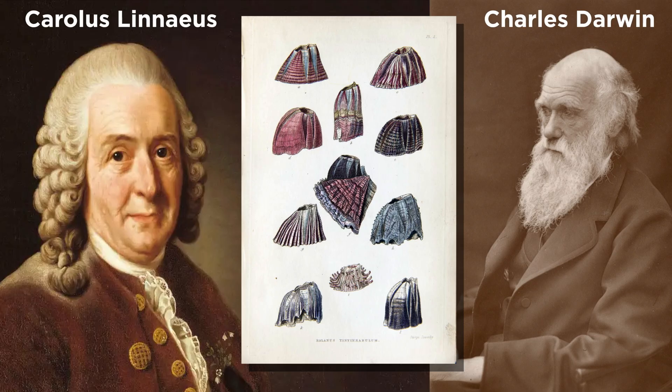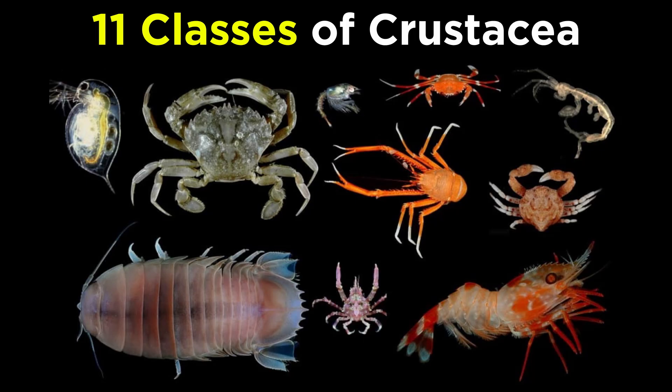In addition to their marine ubiquity, barnacles are infamous in taxonomic and evolutionary circles for their difficult classification, which puzzled many researchers, including Carolus Linnaeus and Charles Darwin — the latter of whom, in his obsession, became a world expert on barnacles. With some crustacean diversity covered, let's move forward and look at the remaining classes next.